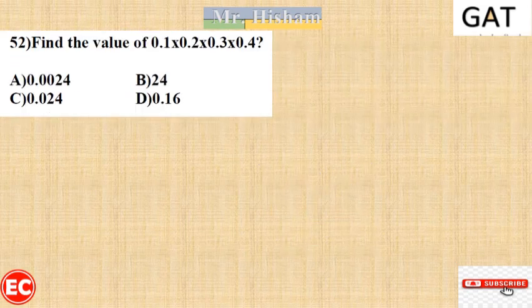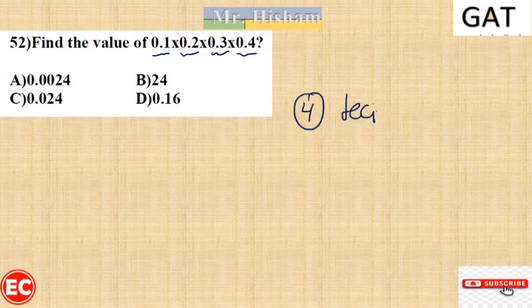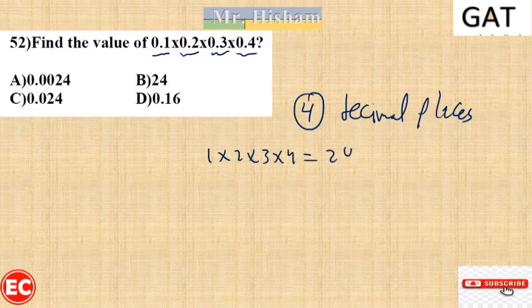Question 52: Find the value of 0.1 times 0.2 times 0.3 times 0.4. Each factor has a decimal after 1 place, so the answer should have 4 decimal places total. Multiplying 1 by 2 by 3 by 4 gives 24, then placing 4 decimal places gives 0.0024.